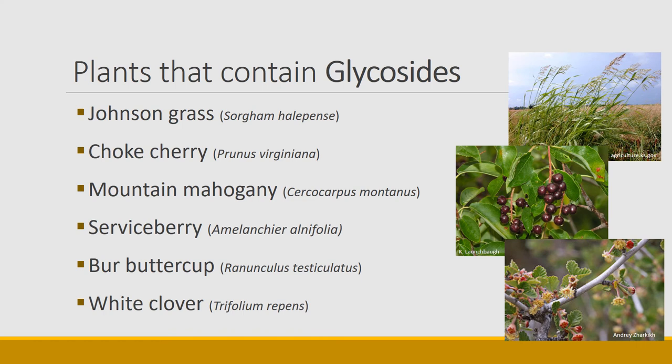One of the really dangerous things about glycosides is that they can change a lot depending on environmental conditions. Johnson grass is one example — there aren't many toxins in it normally, but it can have compounds that become toxic via prussic acid, producing cyanogenic effects if the plant gets stressed by freezing or by heat. A plant like Johnson grass could be fine all the time and then some environmental change happens and the plant becomes toxic.